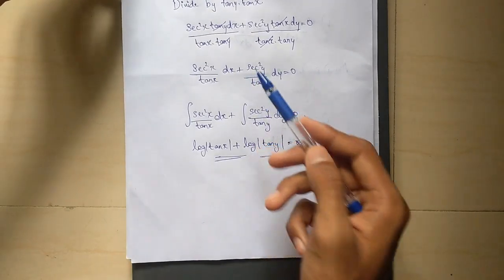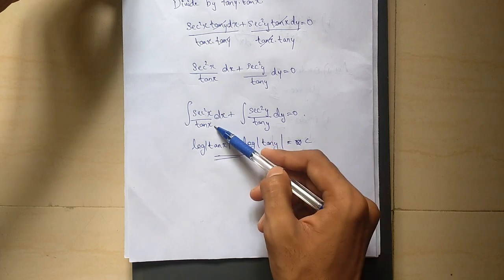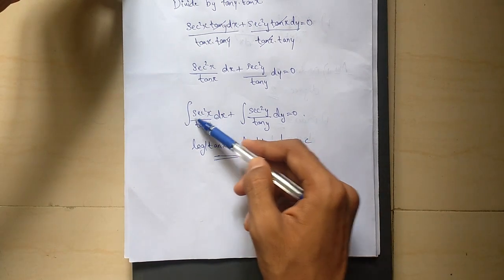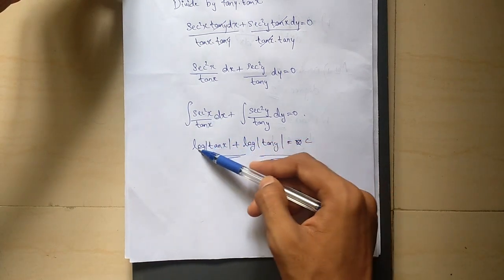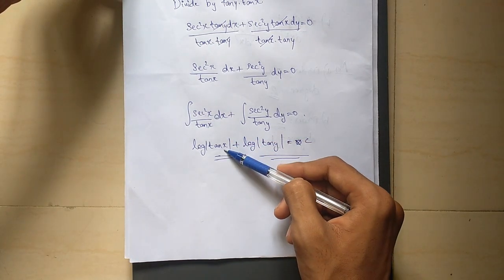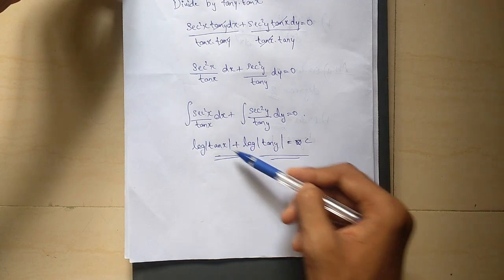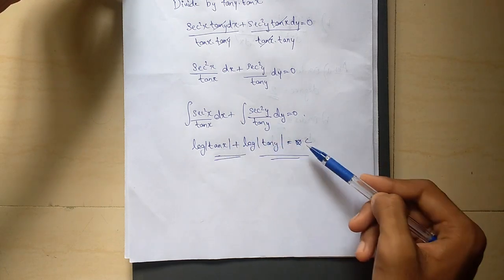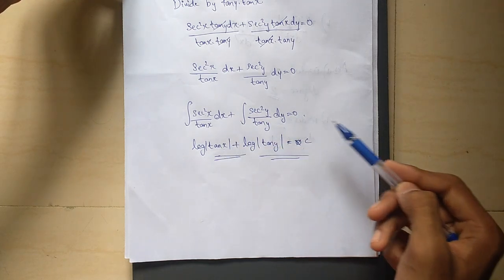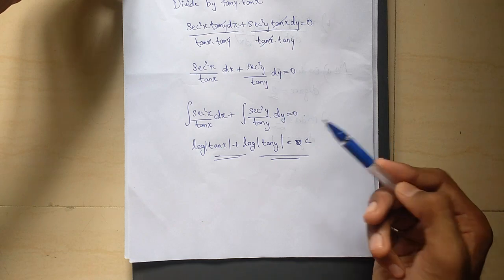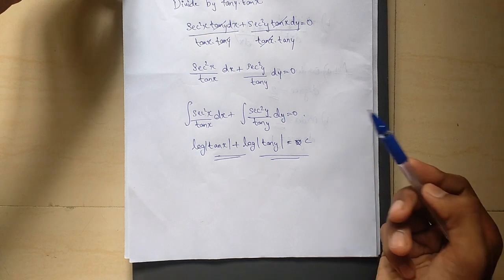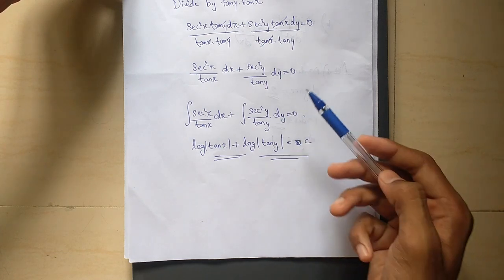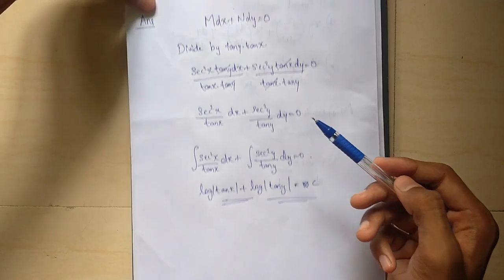We can integrate directly. The third function is not a log here. We say 2 zs equal to c — it is the integral. This means we have a general solution.